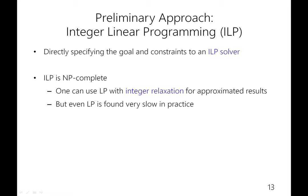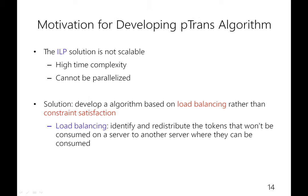The most straightforward solution is to use integer linear programming (ILP), where we can directly specify the goals and constraints to an ILP solver. The ILP solver will give an optimal token allocation. Since ILP is known to be NP-complete, in practice we can also use LP with integer relaxation for approximated results in polynomial time. However, even LP is found to be very slow in practice, which will be shown in the evaluation results. Because the ILP solution is not scalable — it has high time complexity and cannot be parallelized — this motivates us to develop a load balancing model, where the main idea is to identify and redistribute the tokens that won't be consumed at runtime, so that reservations will be guaranteed.